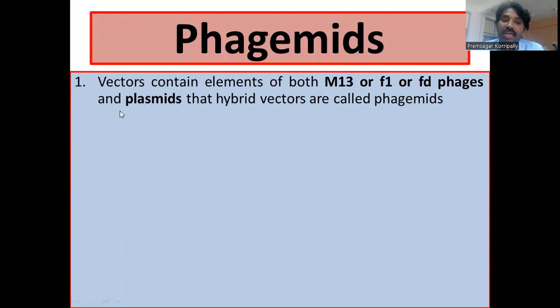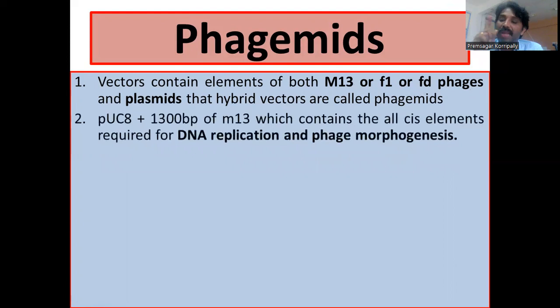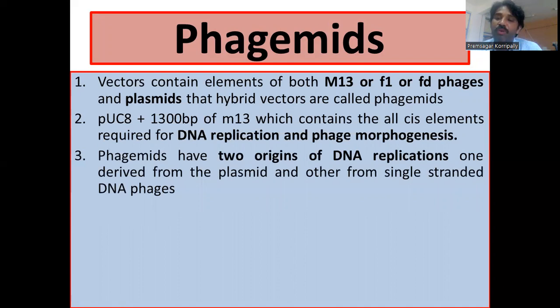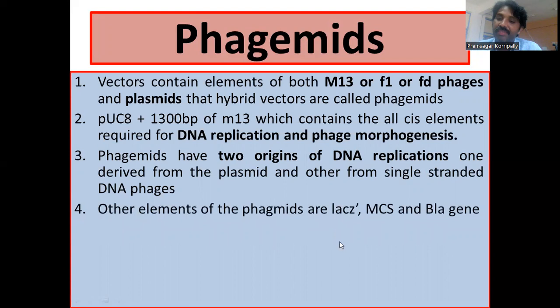Vectors containing elements of both M13, F1, or F3 phages and a plasmid are called phasmids. PMBL8 is constructed using PUC8 and a 1300-base-pair intragenic region of F1, which is essential for DNA replication and phage morphogenesis. Phasmids have two origins of replication: one plasmid origin and one F1 origin. They also have a lacZ region, multiple cloning site, and an antibiotic selection marker — the bla gene encoding beta-lactamase.